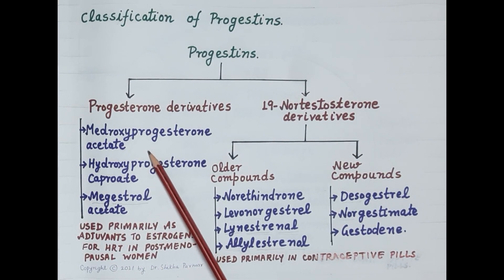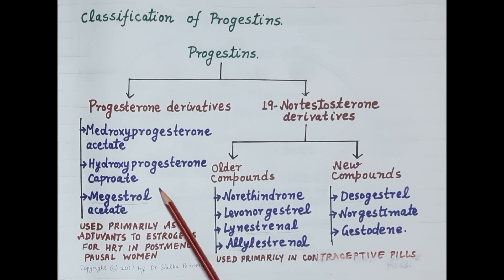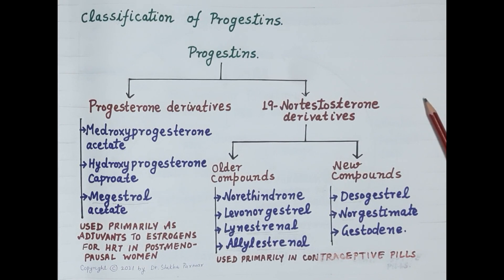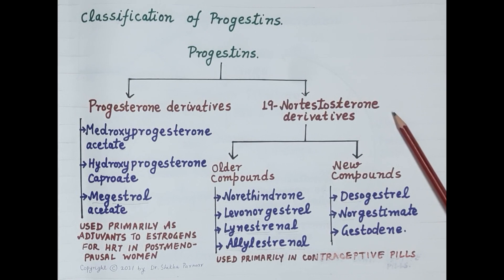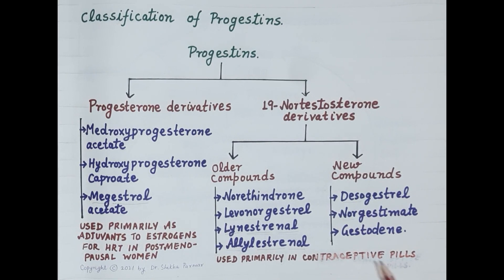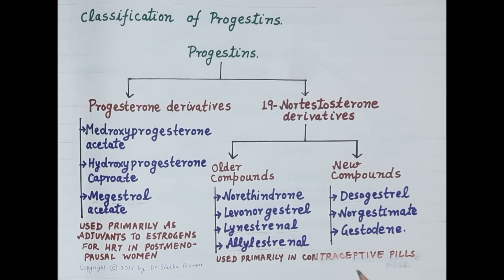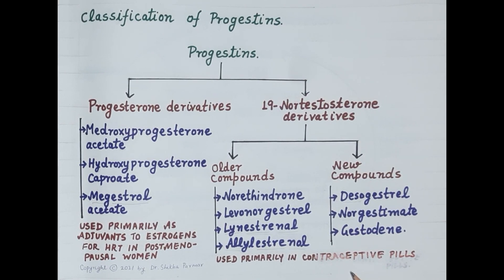Examples of progesterone derivatives are medroxyprogesterone acetate, hydroxyprogesterone caproate, and megestrol acetate. The 19-nortestosterone derivatives are potent progestins that also exhibit potent anti-ovulatory action, and thus they are used primarily in contraceptive pills either alone or in combination with estrogen. Combined contraceptive pills containing both estrogen and progesterone are more efficacious.